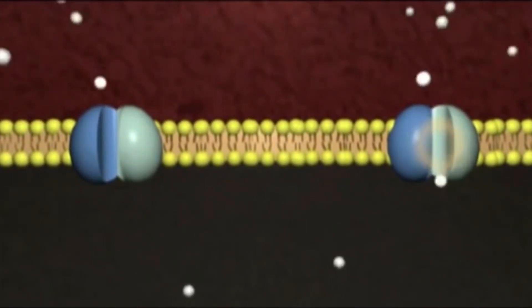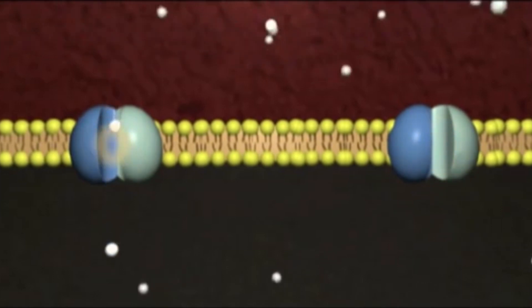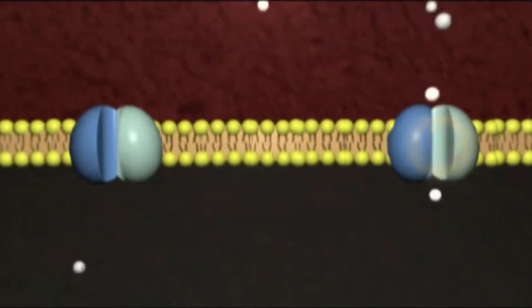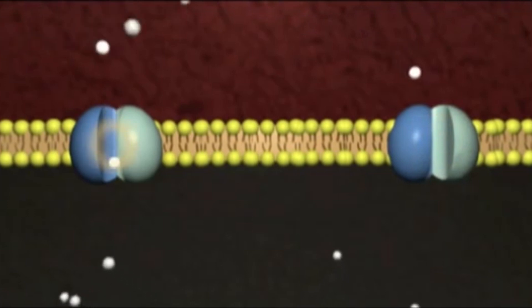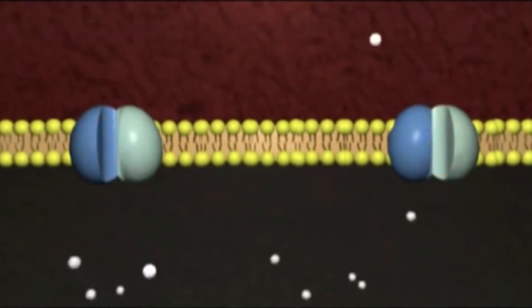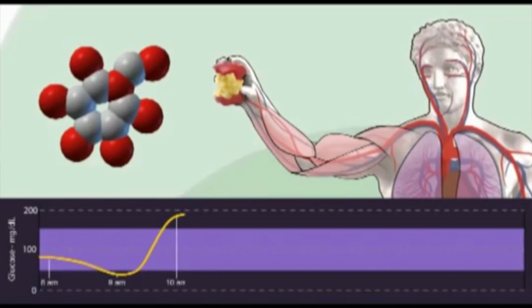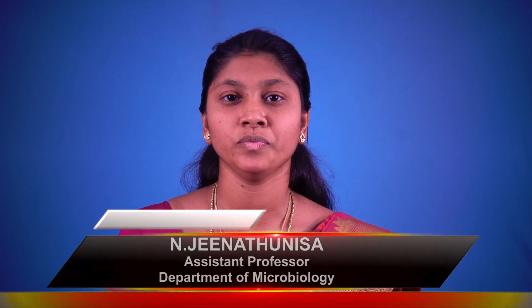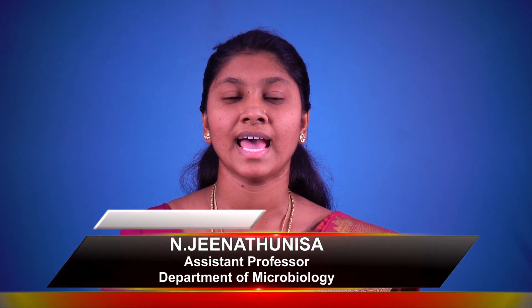The glucose inside the cell is metabolized to generate energy in the form of ATP, required for all cellular activities. As a result, the glucose concentration in the bloodstream decreases. Hope you have understood that insulin converts the sugar we eat into the energy we use. Stay healthy and have a nice day. Thank you.